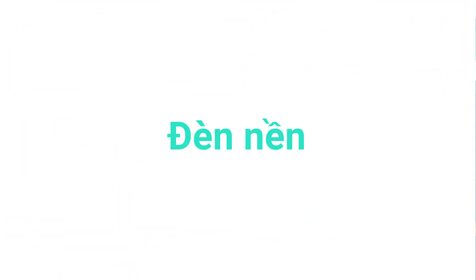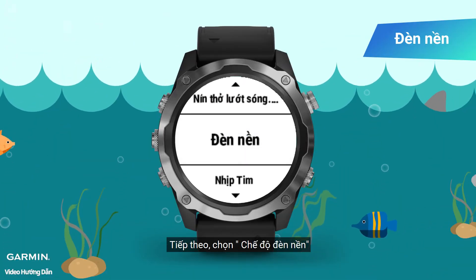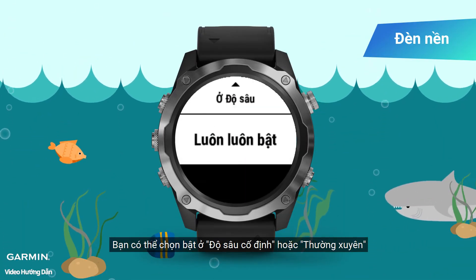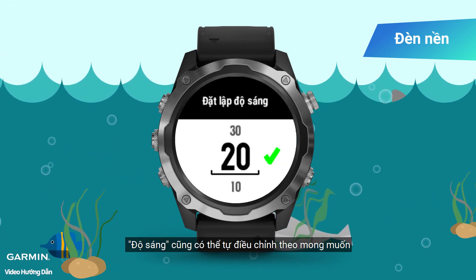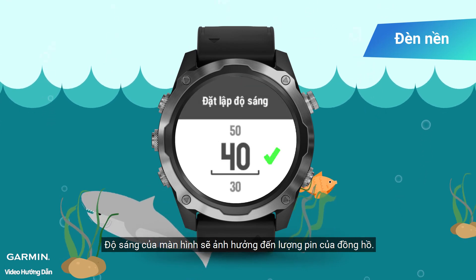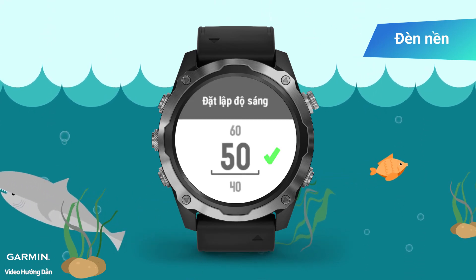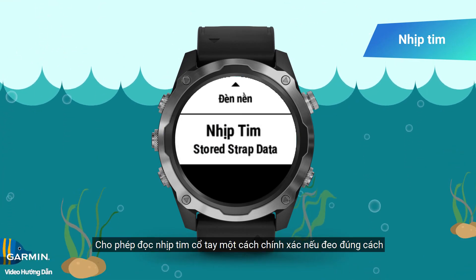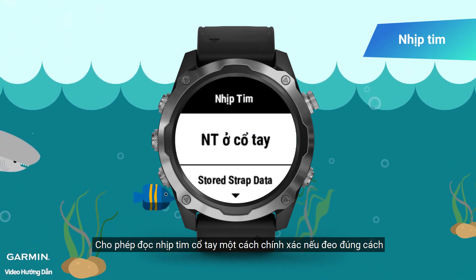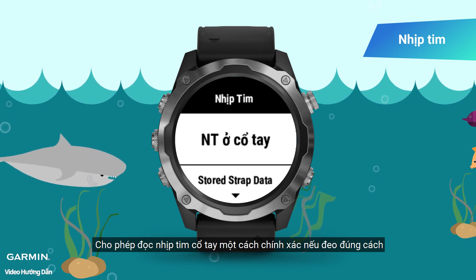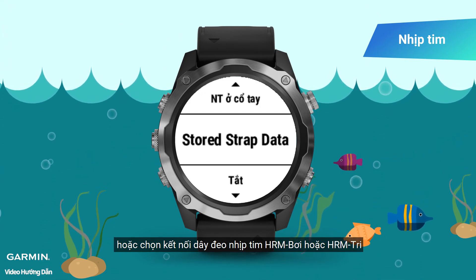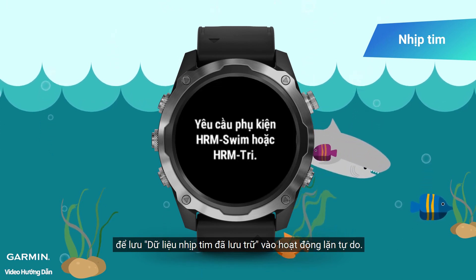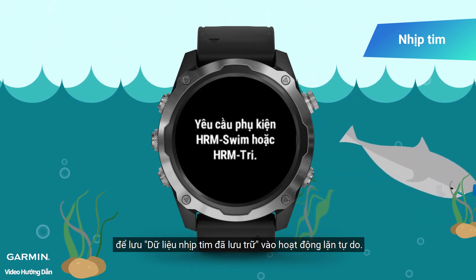Number 9: Backlight. Select backlight mode and choose either at depth or always on. Brightness can also be adjusted according to personal preferences. Note that screen brightness will affect battery consumption. Number 10: Heart rate. The watch has an optical heart rate sensor which can accurately detect the wearer's current wrist heart rate when worn properly. Alternatively, you can pair the HRM Swim or HRM Tri heartbeat strap in advance to bring the stored strap data into the dive activity.